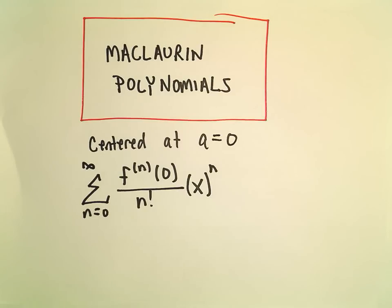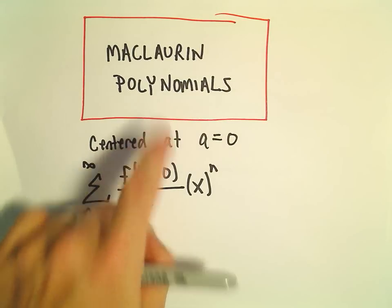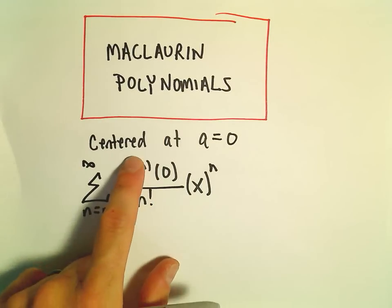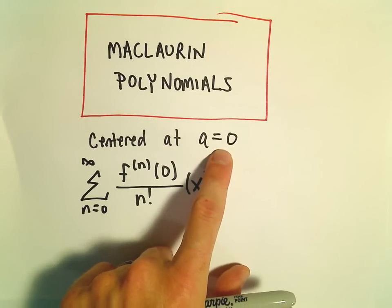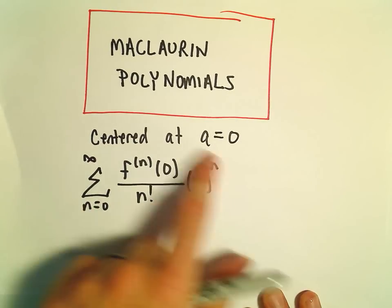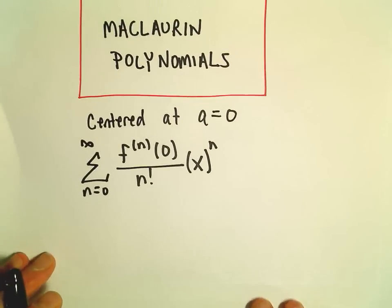Here we're going to do some examples of finding Maclaurin polynomials. A Maclaurin polynomial is just a special case of a Taylor polynomial. A Maclaurin polynomial is, by assumption, centered at a equals 0. I've rewritten our formula here, emphasizing the fact that a is equal to 0.